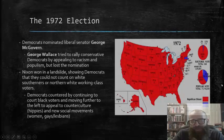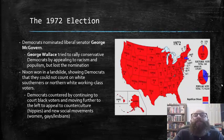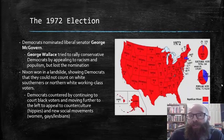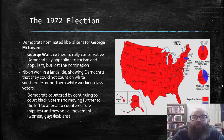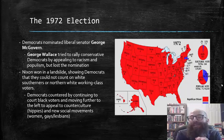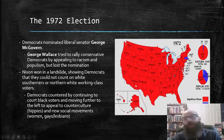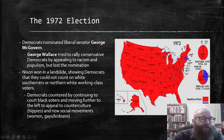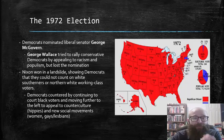In the election of 1972, Democrats nominated liberal Senator George McGovern. George Wallace, a Southern conservative Democrat, tried to rally conservative Democrats by appealing to racism and populism, but lost the Democratic nomination. Nixon won this election in a landslide, as shown by the electoral map here. This showed Democrats that they could not count on white Southerners or Northern white working class voters.